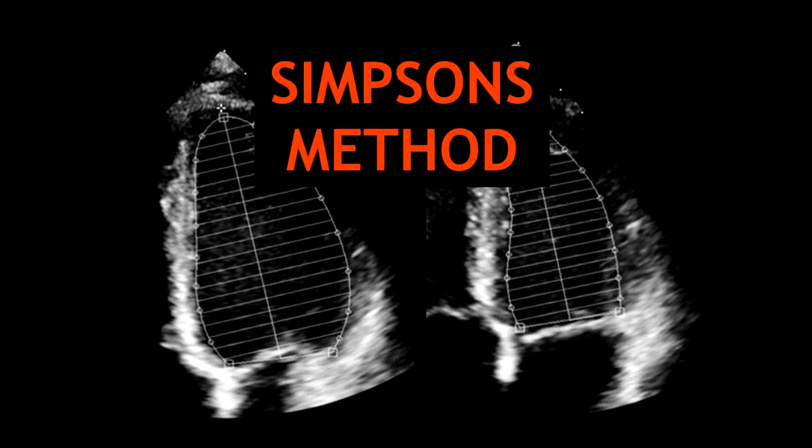Estimating the ejection fraction by Simpson's biplane method is more accurate than using the Teicholz method. However, it will always be more accurate using 3D or 4D measurements. I hope you enjoyed this video — don't forget to like and subscribe.